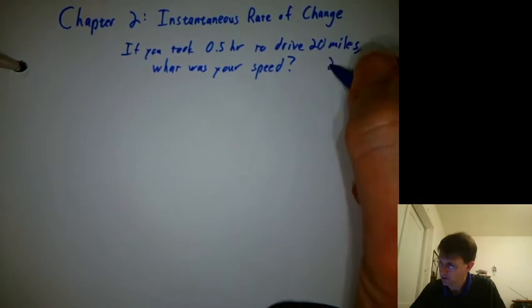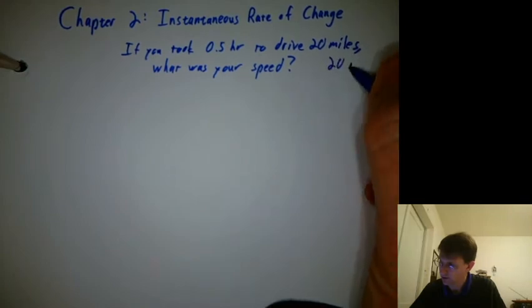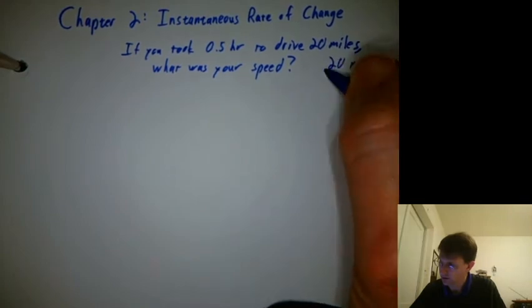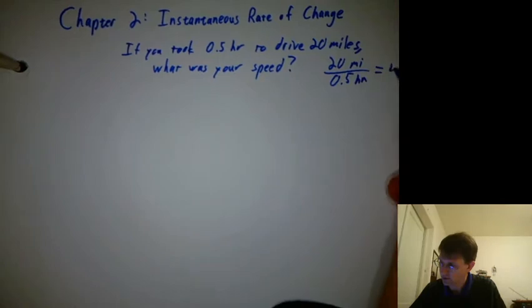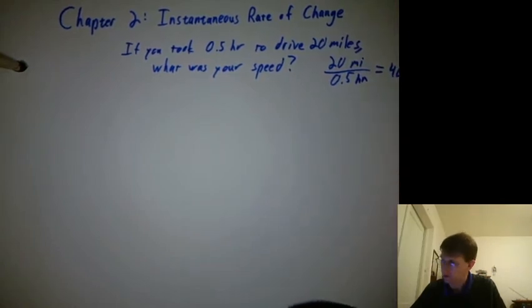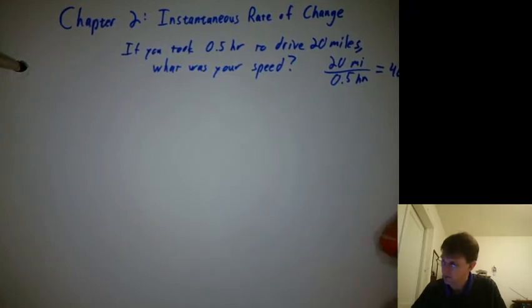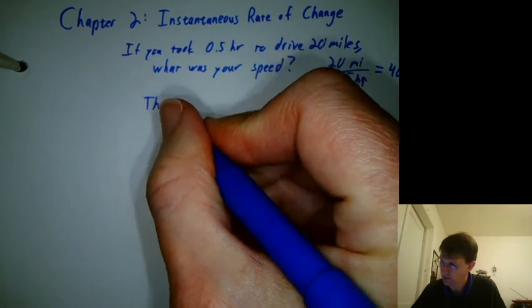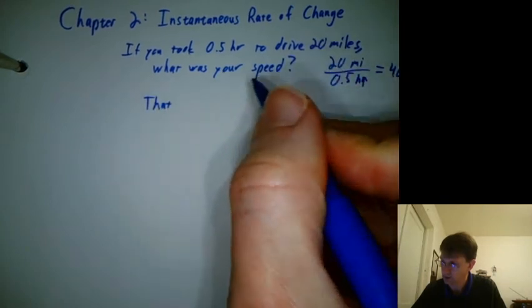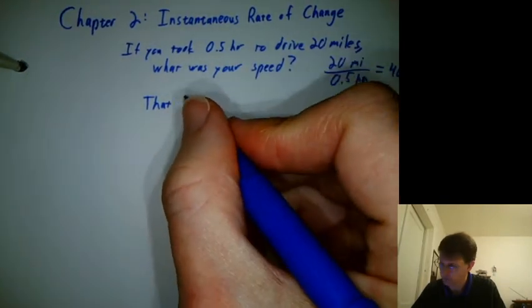You'd probably say a distance of 20 miles in half an hour gives you 40 miles per hour. Now, was that your speed exactly the whole time? Well, no — that was more of your average speed. You probably weren't going exactly 40 the whole time.